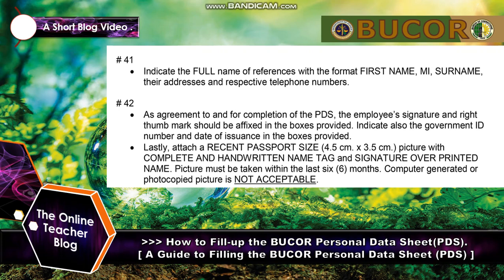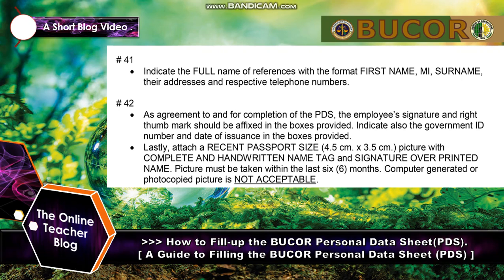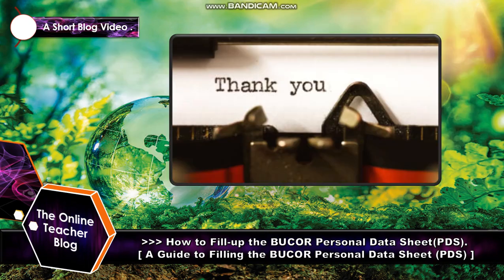Number 41: indicate full names of references in the format — First Name, Middle Initial, Surname — along with their addresses and respective telephone numbers. Number 42 — Agreement: upon completion of the PDS, the employee's signature and right thumb mark should be affixed in the box provided. Indicate the government ID number and date of issuance. Lastly, attach a recent passport-size photo (4.5 cm by 3.5 cm) with a complete handwritten name tag and signature over printed name. The photo must not have been taken within the last six months; computer-generated or photocopied pictures are not acceptable.